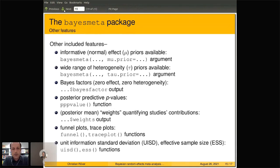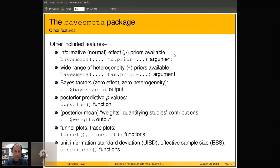Some other features included in the package: for the overall effect you can also specify prior distributions via an additional mu.prior argument — restricted to normal priors for the overall odds ratio. For the heterogeneity, we're quite flexible with prior distributions for tau; you can specify all sorts of functions for the tau prior.